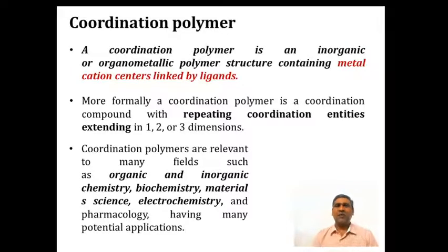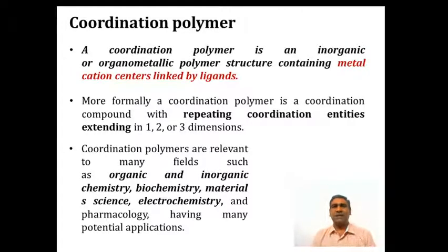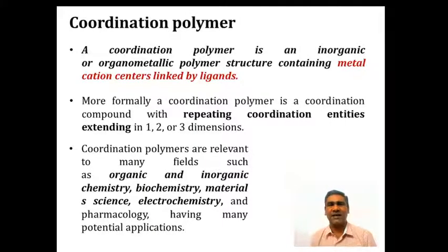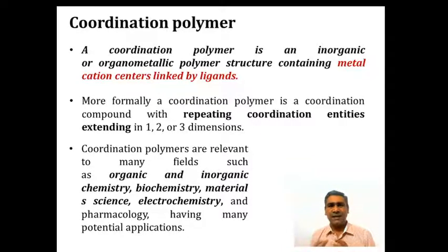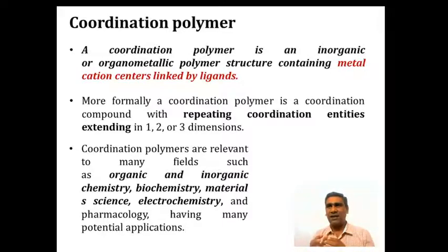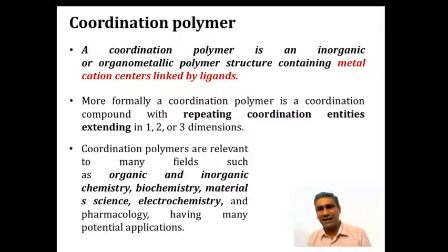What do we mean by a coordination polymer? A coordination polymer is an inorganic or organometallic polymer structure containing metal cation centers linked by ligands. As we have seen in metal organic frameworks, these inorganic or organometallic polymeric structures are formed from metal cations and organic ligands.